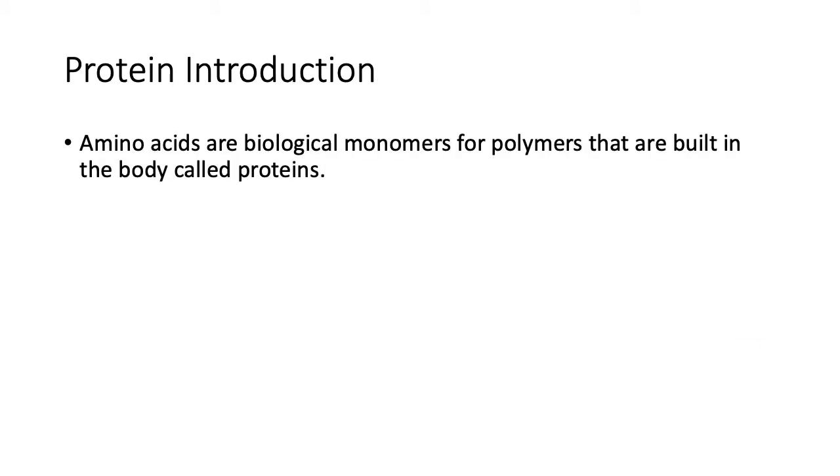Amino acids are biological monomers for polymers that are built in the body called proteins. We've been dealing with polymers before, so now we're talking about monomers. We're going to use the amino acids as monomers to build a polymer, and when you put that all together they make proteins.